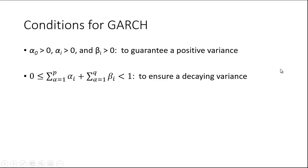There are conditions for using GARCH. We want to make sure we get a positive variance, so alpha naught needs to be greater than zero, as do all the alpha i's and beta i's. We also need it to be the case that the sum of the alpha i's plus the sum of the beta i's are less than one and positive. We want to ensure that we have a decaying variance, that the variance isn't continuing to grow and grow.